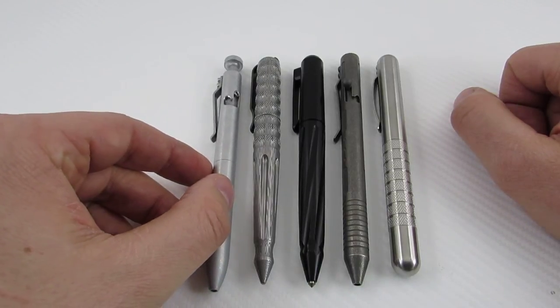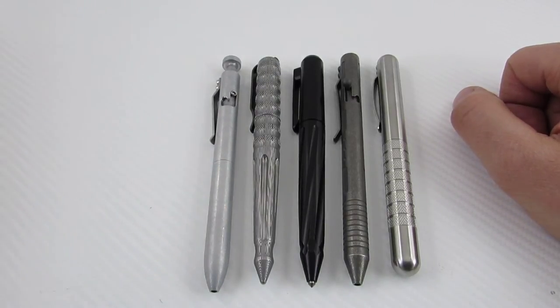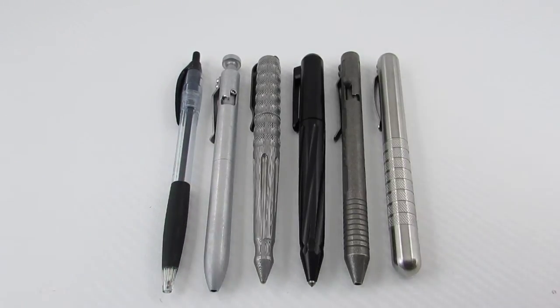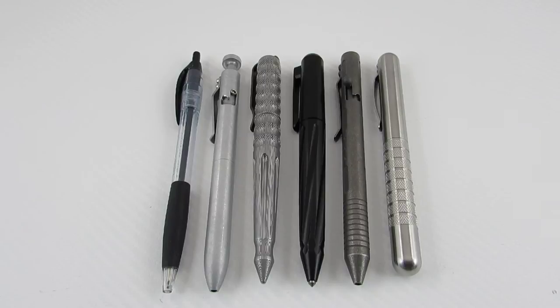Karas Custom TiBolt, mostly one-handed, and then here is a Bic Atlantis. A few different size comparisons. They're all quite comparable to be honest.